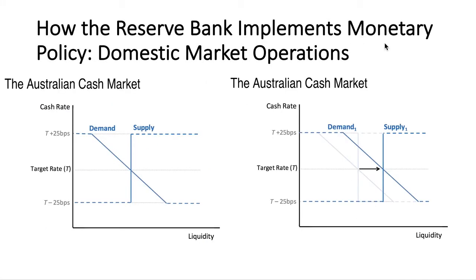So how does the RBA actually implement monetary policy? Through domestic market operations, or DMOs. We can show this on a demand and supply graph — the demand and supply for liquidity in the cash market, with the target rate or cash rate as the price axis. They don't keep it exactly at the target cash rate but try to keep it as close as they can. At the moment it's 1.5%. They keep it plus or minus 25 basis points and have gotten better at this over time. Where demand and supply hits an equilibrium is the target rate.